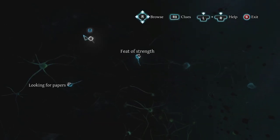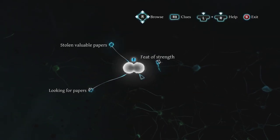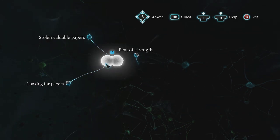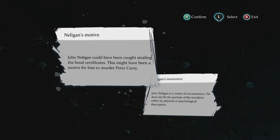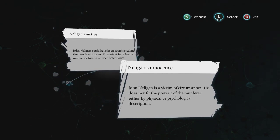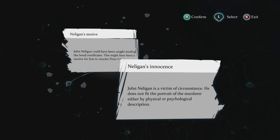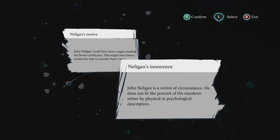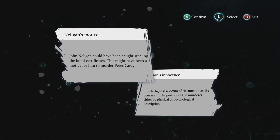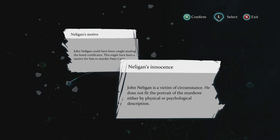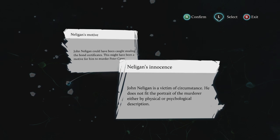Let's try that. Valuable bond certificates were kept inside the Slanton box. This could have been a motive for him to murder Peter Carey. However, he's a victim of circumstance — he does not fit the portrait of the murderer either by physical or psychological description. That's kind of true, but at the same time, if he is a murderer... he just doesn't feel like a murderer to me, but then again, he's not a real person.